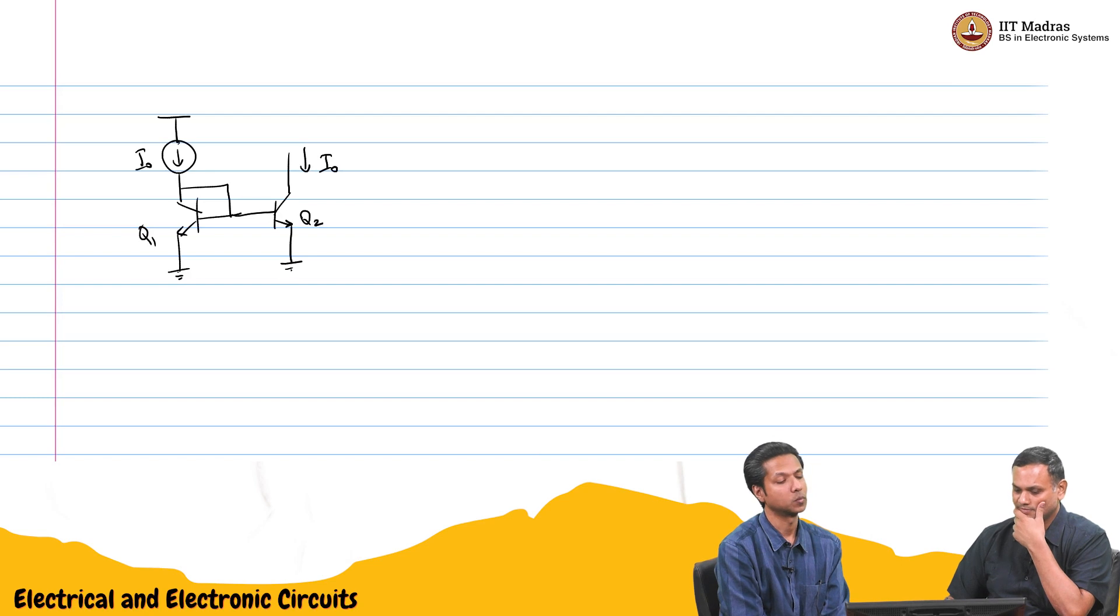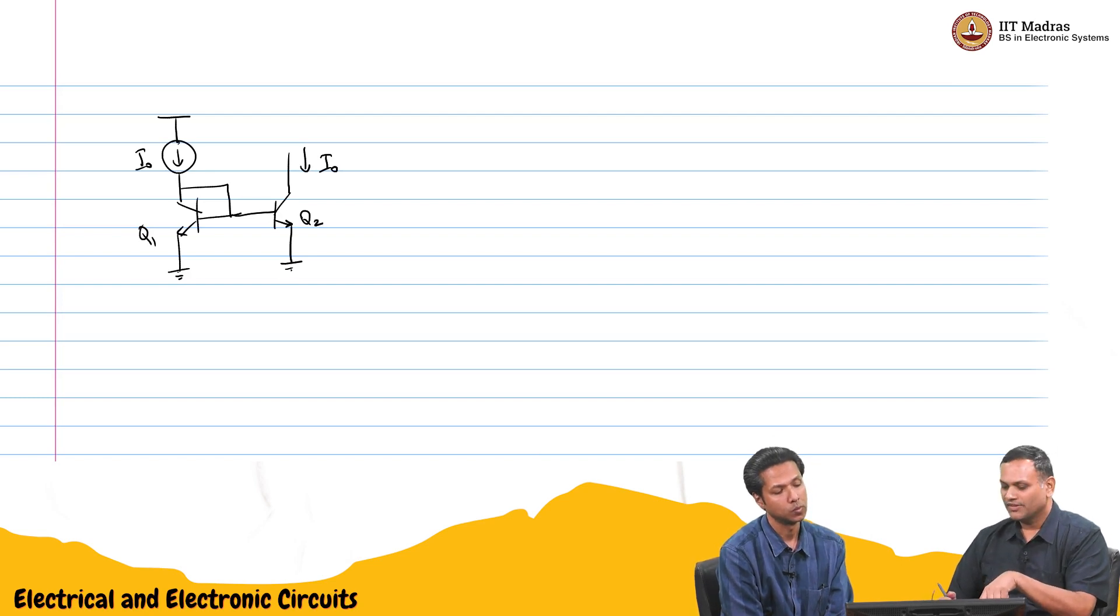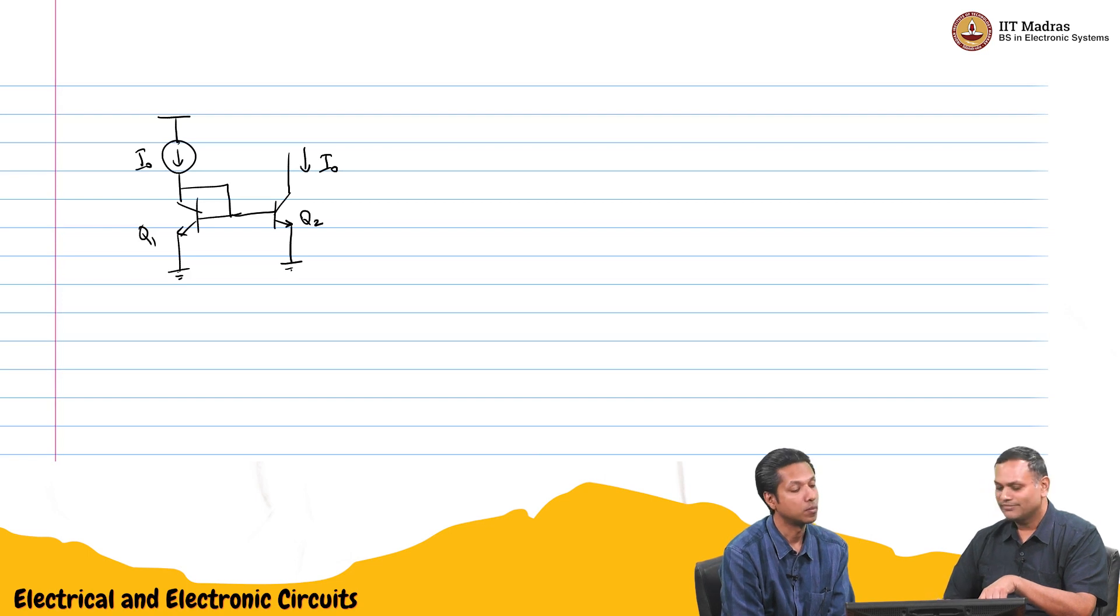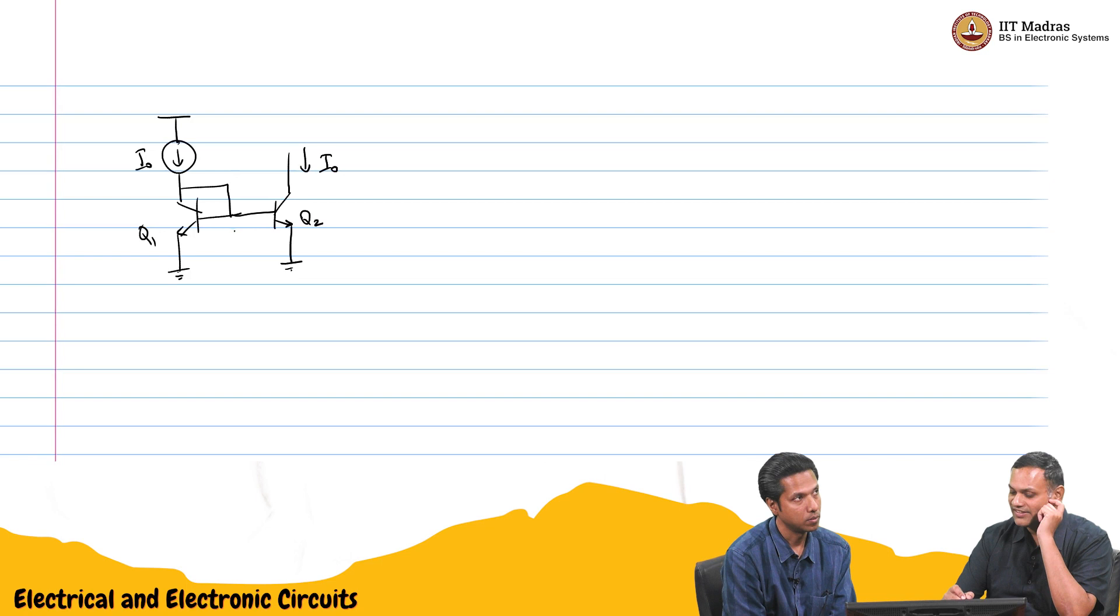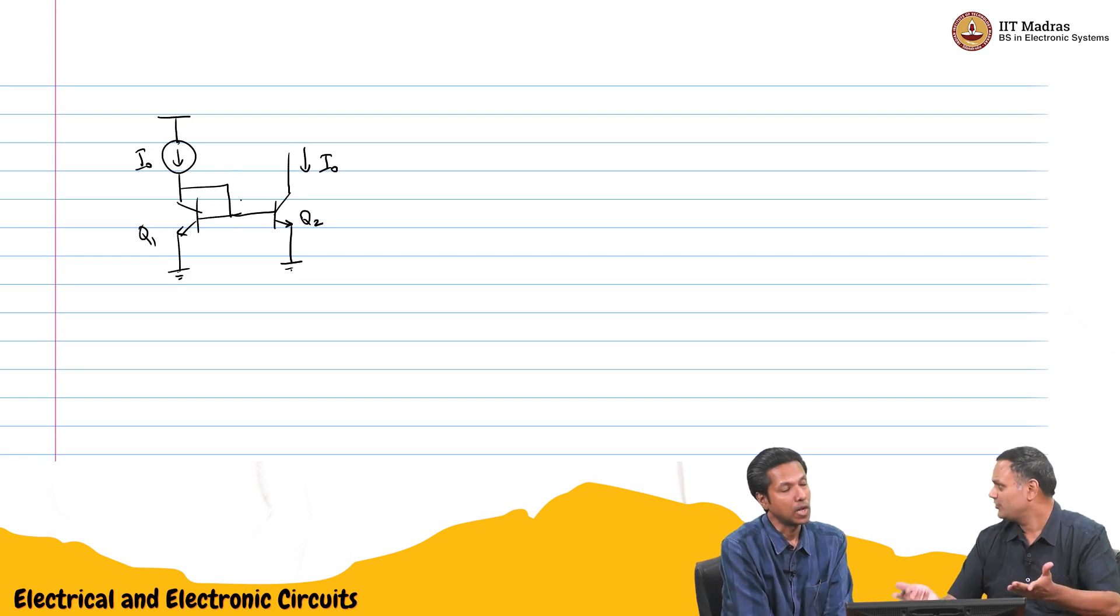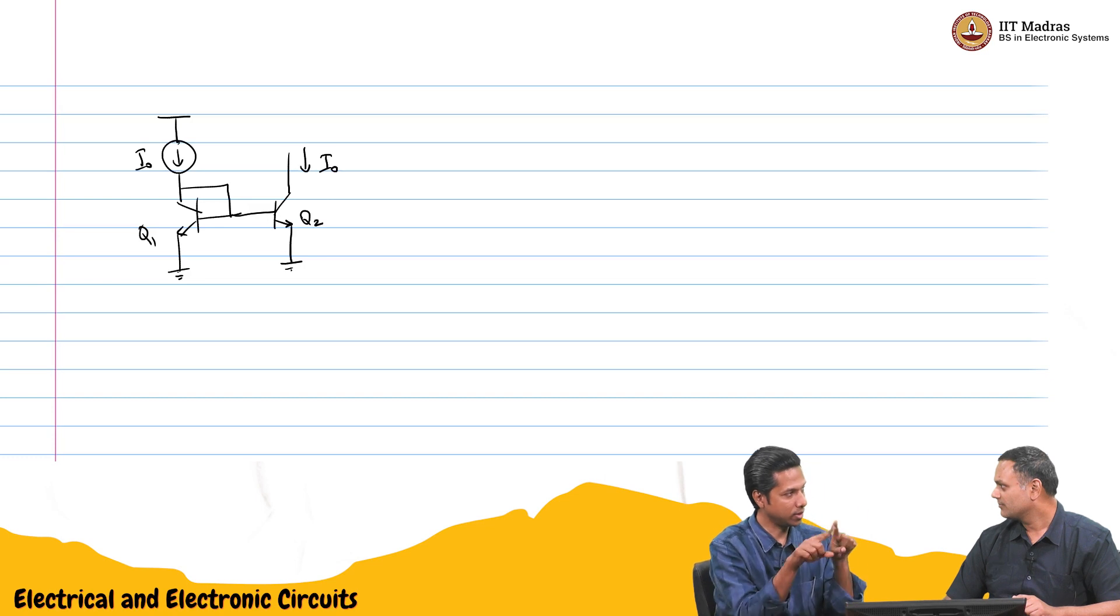That is what we said. Seems like if beta is infinity, you can do the same thing for the MOSFET. We said this current should be small. VGS, as long as it is the same for both, ID will be the same.